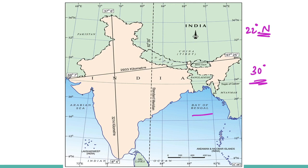The latitudinal and longitudinal extent of the mainland is about 30 degrees. The east-west extent appears to be smaller than the north-south extent. From Gujarat to Arunachal Pradesh there is a time lag of two hours. Hence, time along the standard meridian of India — 82°30' East, passing through Mirzapur in Uttar Pradesh — is taken as the standard time for the whole country.